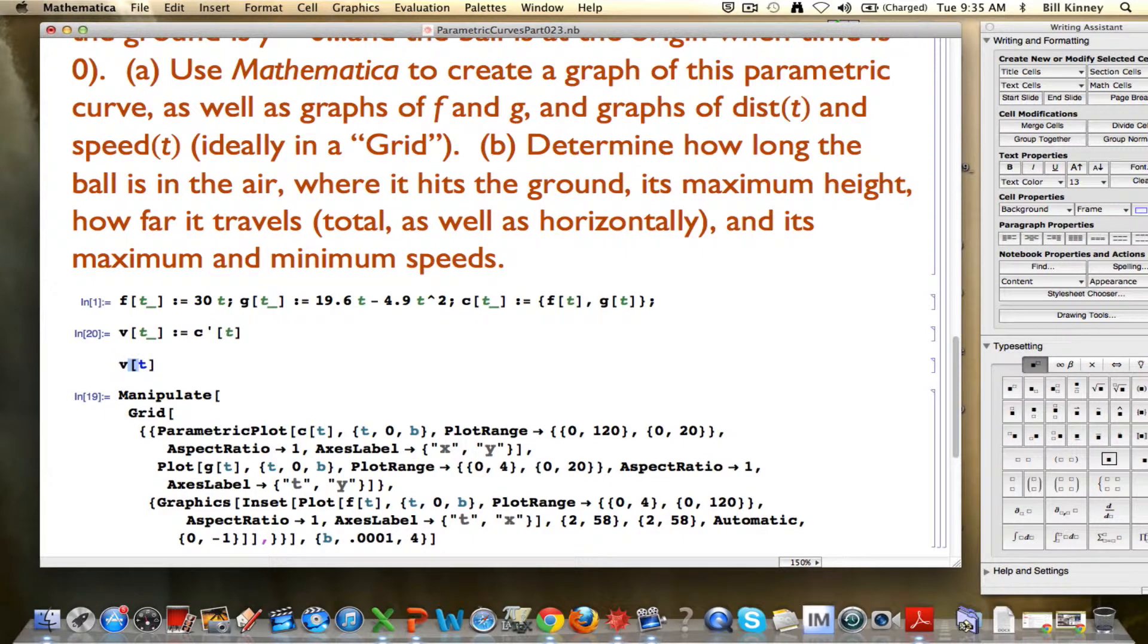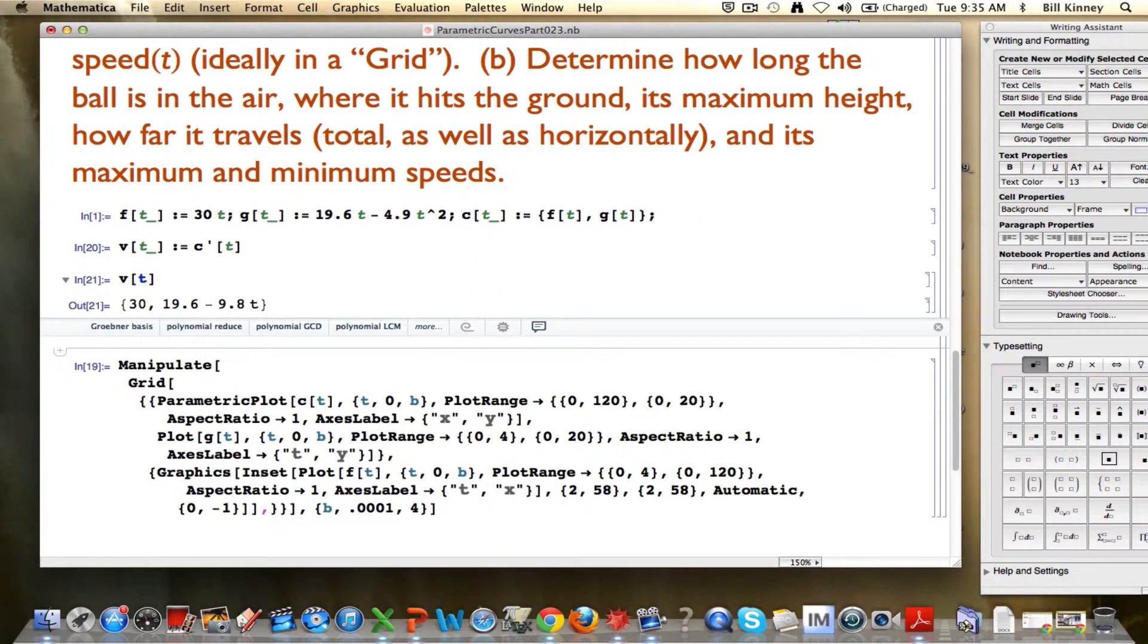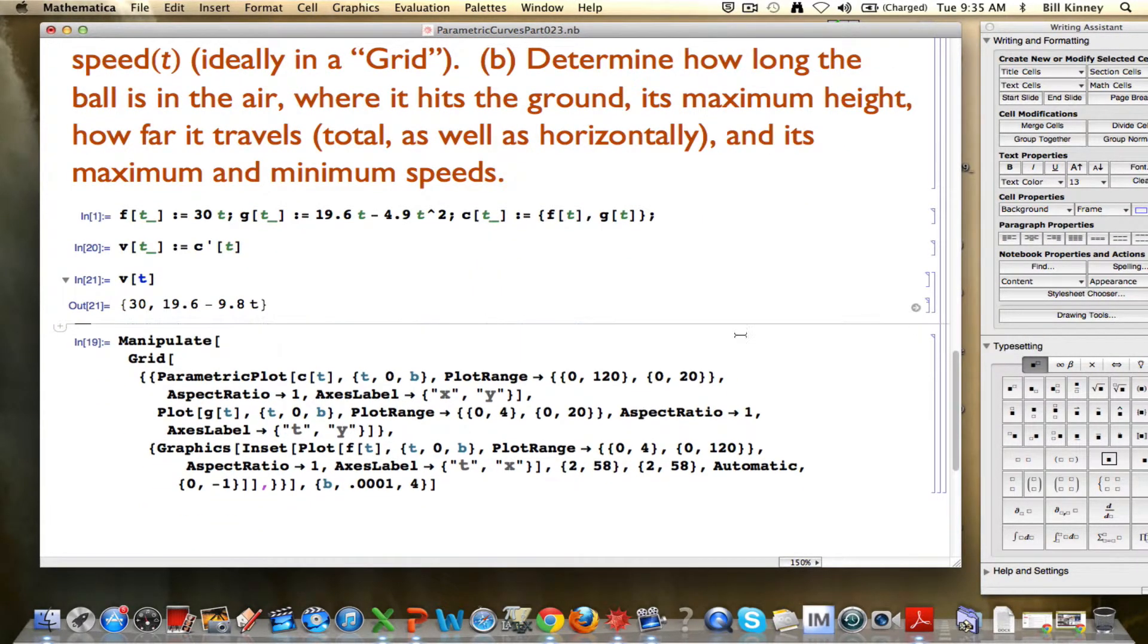And we can see what it is. It's this vector. You get it by differentiating the first coordinate, the first component to get 30, and the second coordinate or second component to get this. If you know calculus, you should be able to derive that on your own. If you are just in pre-calculus, you're just trusting me.